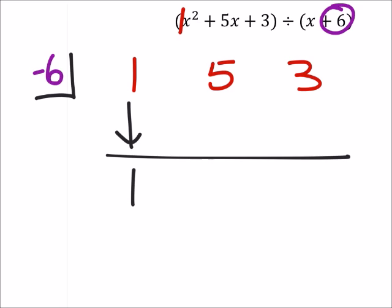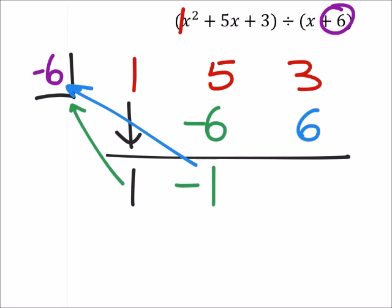Of course, we'll always just drop that first coefficient. So then, I've got 1 times negative 6, which is negative 6. 5 minus 6 is negative 1, which I will then multiply by negative 6, which is a positive 6.